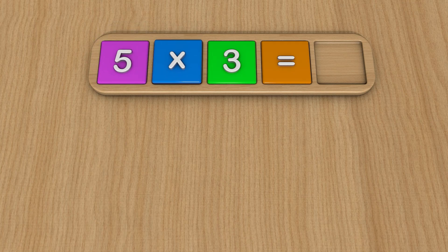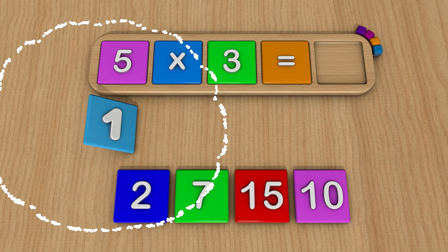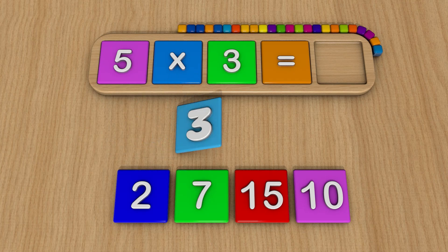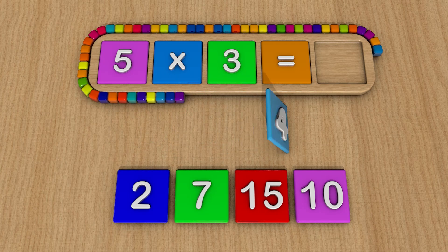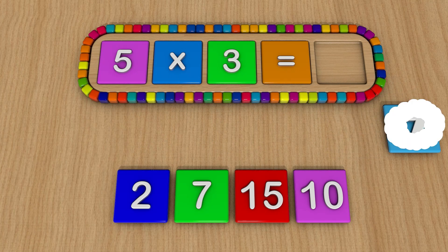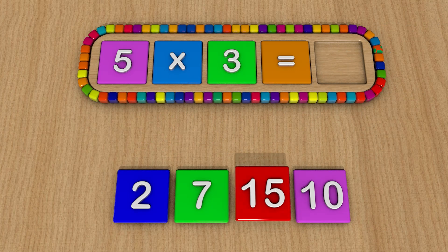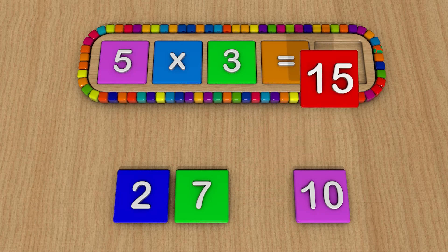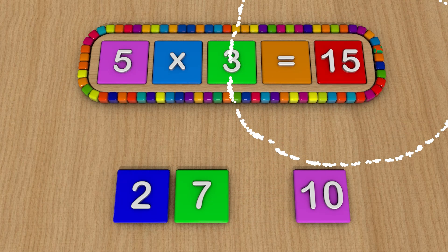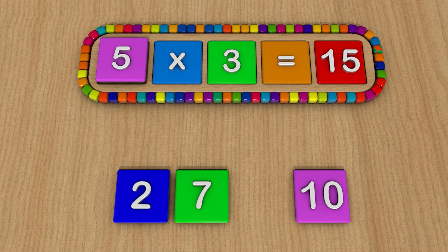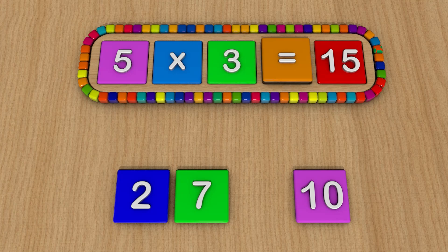5 times 3 equals... 15. 5 times 3 equals 15.